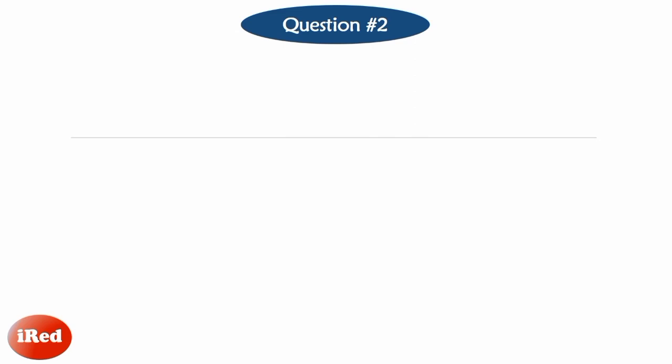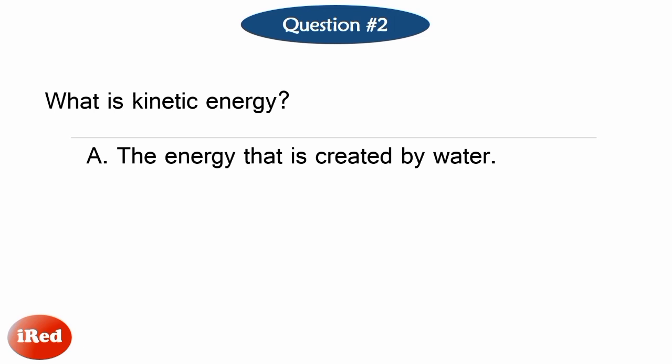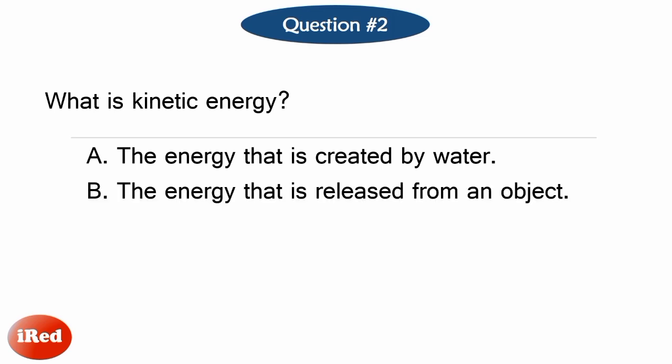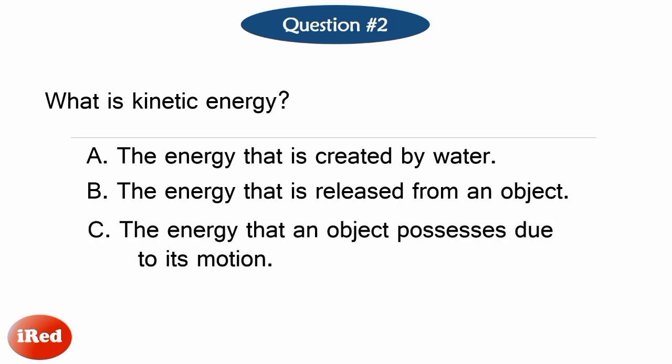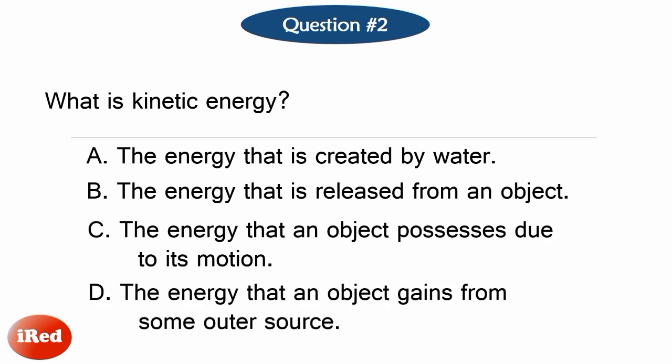Number 2. What is kinetic energy? Letter A, the energy that is created by water. Letter B, the energy that is released from an object. Letter C, the energy that an object possesses due to its motion. Or Letter D, the energy that an object gains from some outer source.